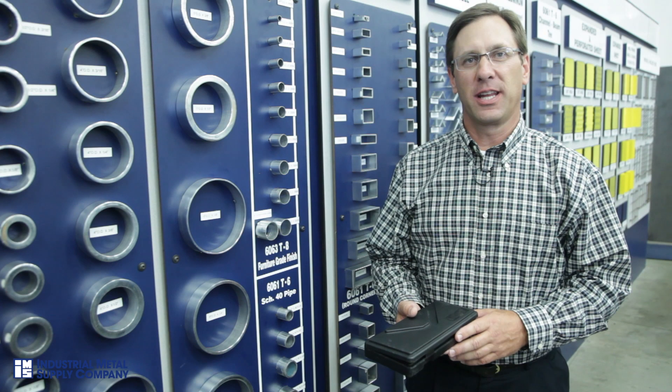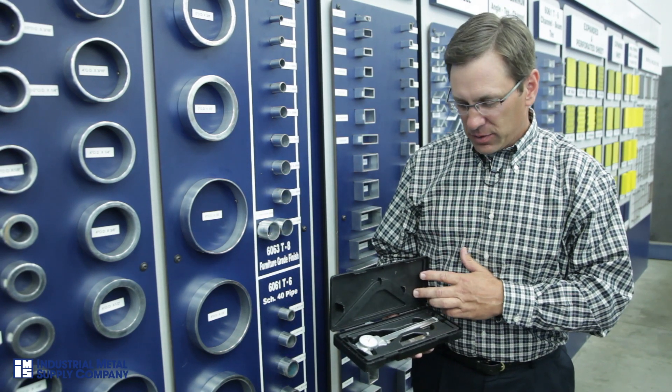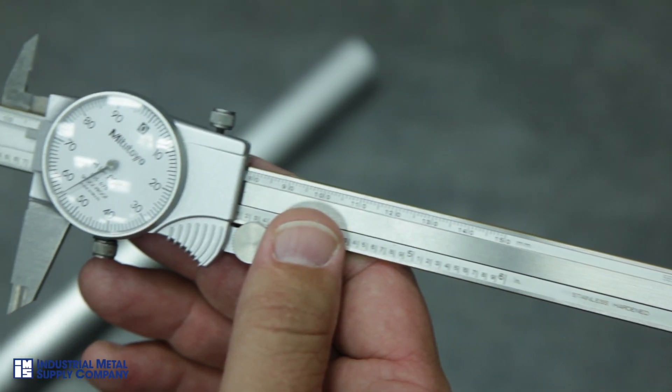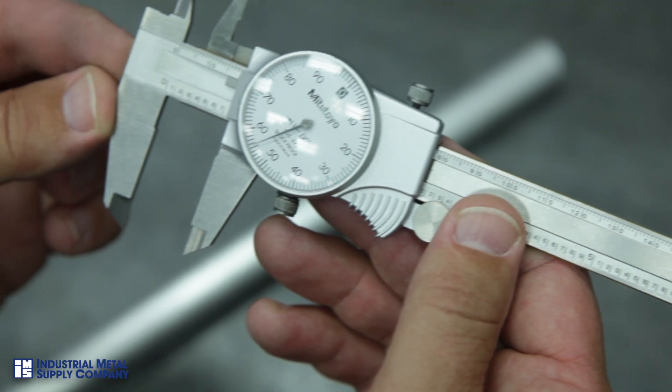The first measuring tool we're going to discuss today is the dial caliper, used for measuring diameters, thicknesses, and lengths of small items. This tool here measures up to six inches.